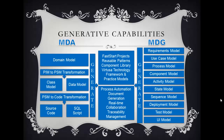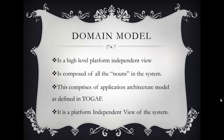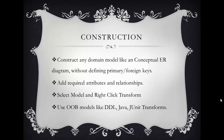MDG allows process automation, document generation, real-time collaboration, and traceability management. The domain model is a high-level platform independent view composed of all the nouns in the system — all the objects that interact with each other. This comprises the application architecture model as defined in TOGAF and is a platform independent view of the system.